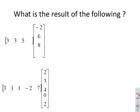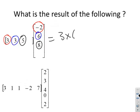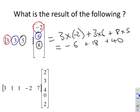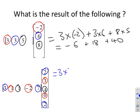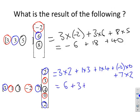Some examples: what's the result? We take first against first, second against second, third against third. The answer is 3×(−2) + 3×6 + 8×5, which gives −6 + 18 + 40. For the second example we take first against first, second against second, third against third, fourth against fourth, and fifth against fifth: 3×2 + 1×3 + 1×4 + (−2)×0 + 7×2, giving 6 + 3 + 4 + 0 + 14.